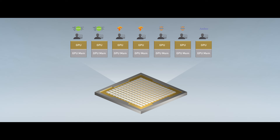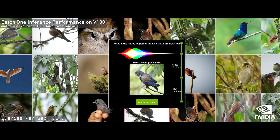Let's take a look at the power you can expect using MIG on the NVIDIA A100. This is a demo of a natural language understanding model that classifies bird species based on sound and answers the question: what is the native region of the bird I'm hearing? We'll start with a single NVIDIA V100 Tensor Core GPU, the predecessor of the A100. We use Jasper, a deep learning model for speech recognition, and BERT, a deep learning model for natural language processing.